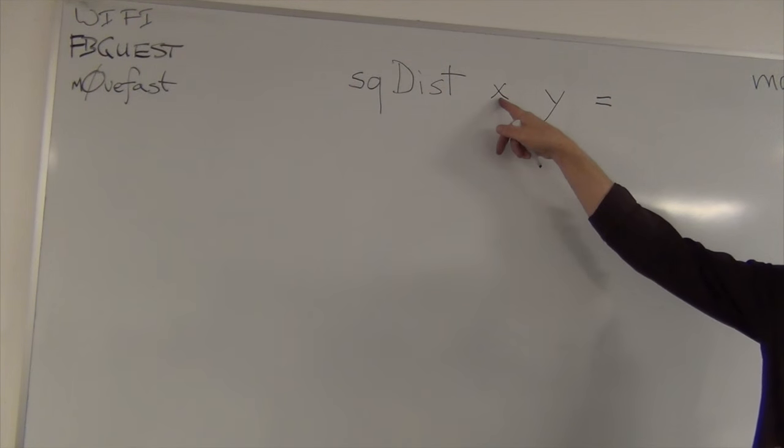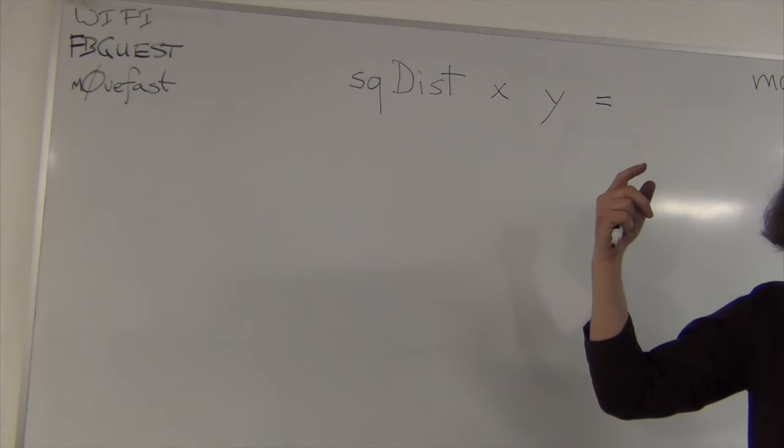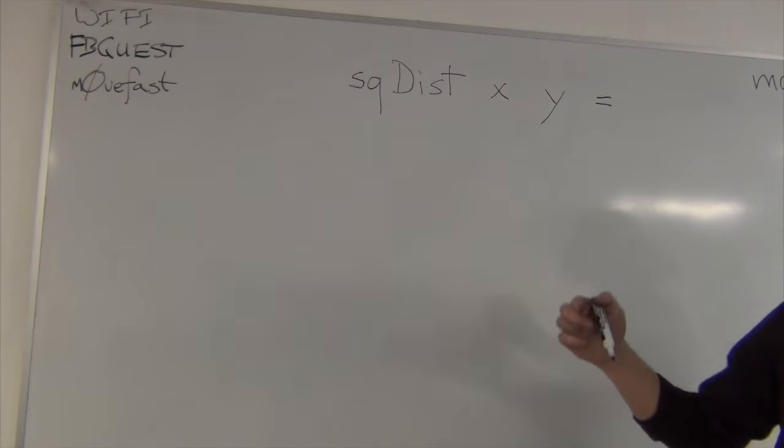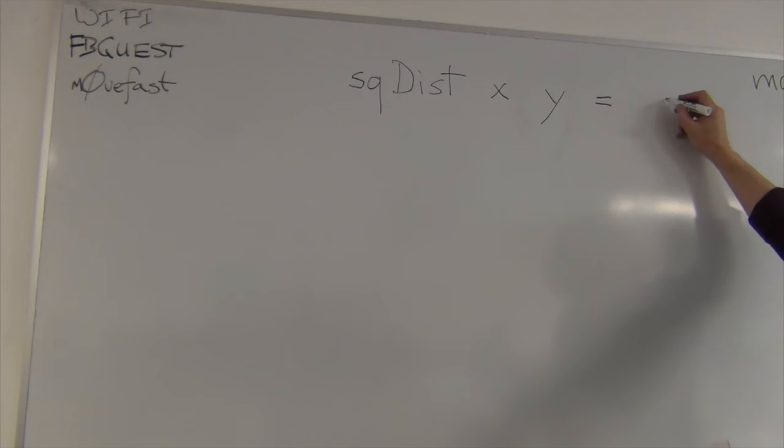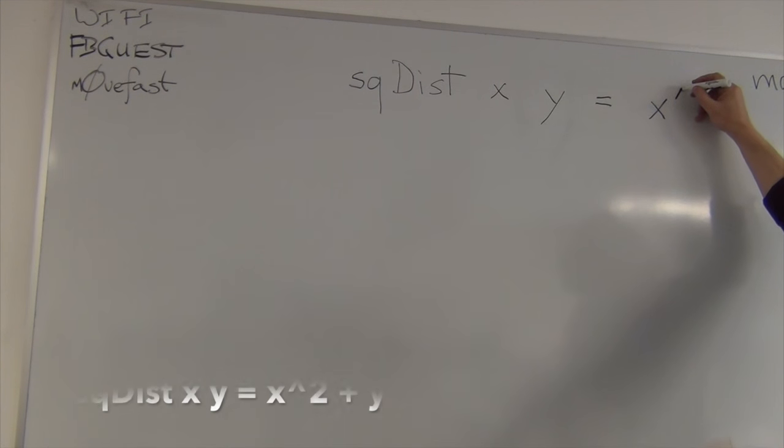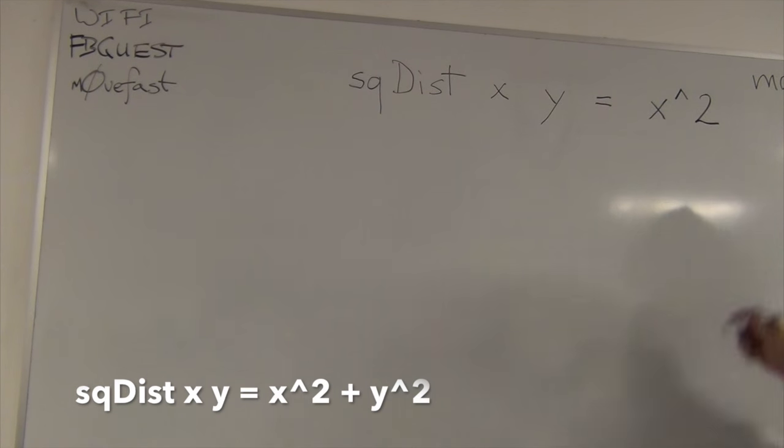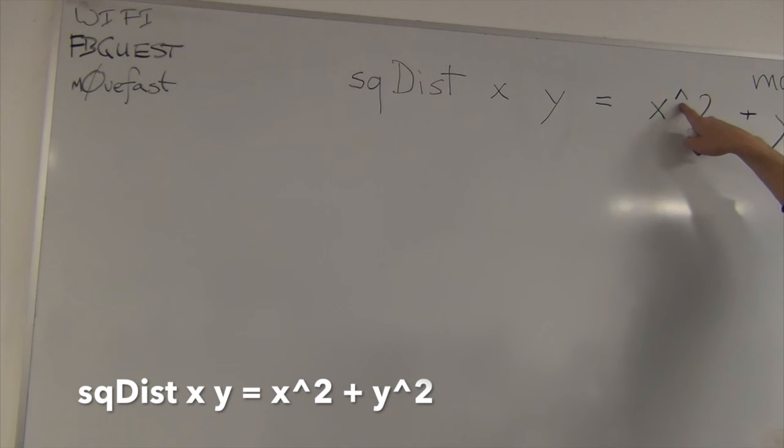We want to square dx and square y and add them. Right? That's the distance from the origin. So, how do we square things? Okay. You can write x times x if you want, or you can type x to the power of 2. Same. Plus y to the power of 2. Okay? That's a power.